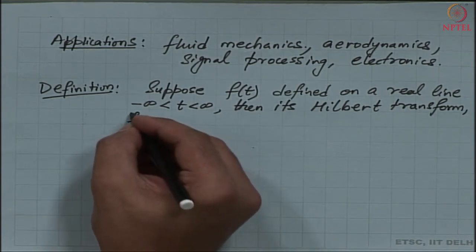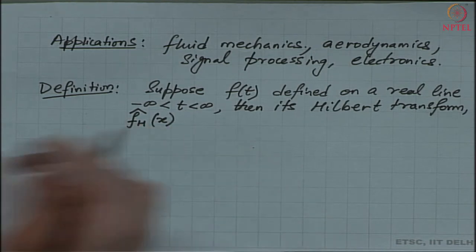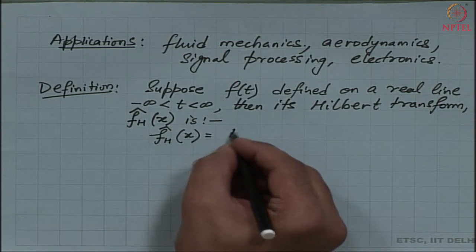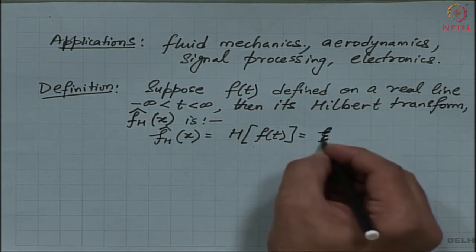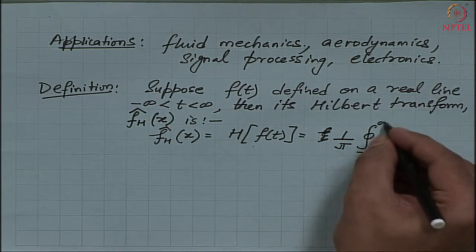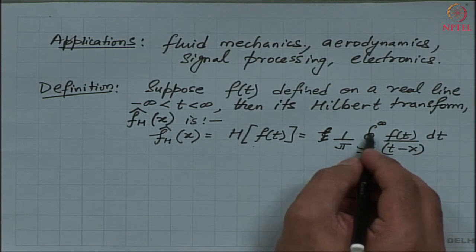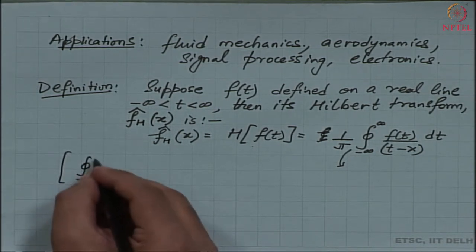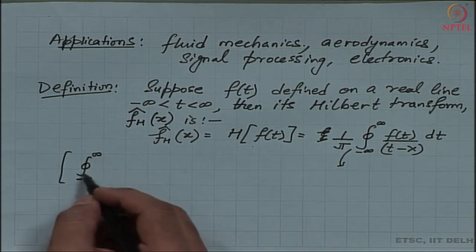The Hilbert transform, denoted f-hat subscript H, is defined as H{f(t)}, which is given by the following integral: 1 over pi times the integral from negative infinity to infinity of f(t) divided by (t minus x) dt. Notice that this is a definite integral over the real axis and in general it is not a contour integral.